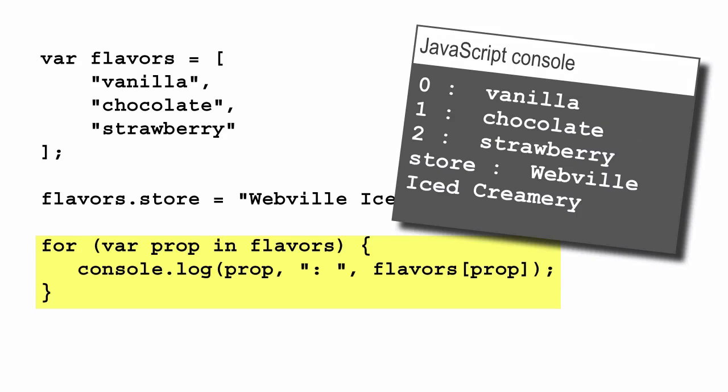But clearly, the array is treating some of these properties in a different way than it treats the property store. And that's what makes it a special kind of object. The array adds this layer on top of an object, providing this index capability, along with various properties and methods.